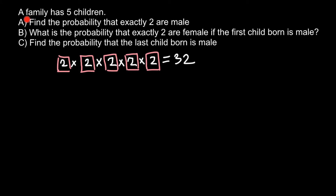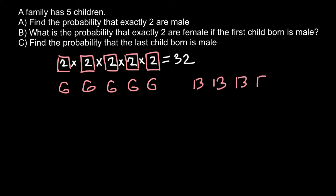We need to find the probability that exactly two children would be male, meaning the other three would be female. The first extreme variant is that all five children are girls, and another variant is that all five children are boys. These two combinations each occur only once out of 32.